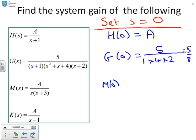M of zero is technically not defined because you get four over zero times three, i.e. infinity. This is important to recognize — M has got an S on its own in the denominator, i.e. a pole at zero, or what we call an integrator. The consequence is the steady state gain is infinite, which is an important property we will use later.